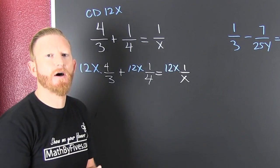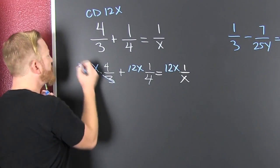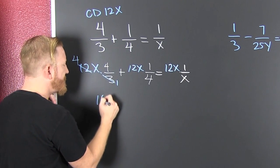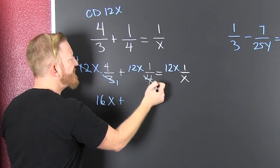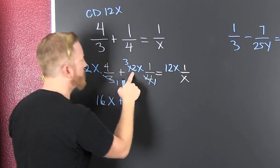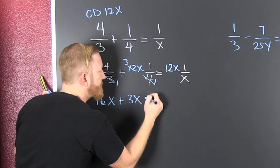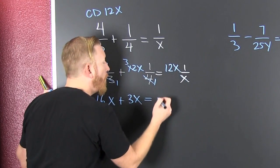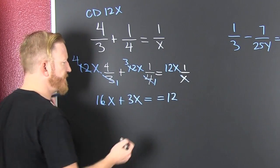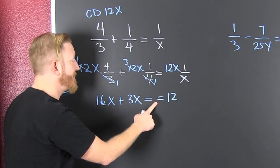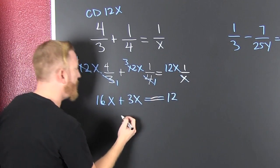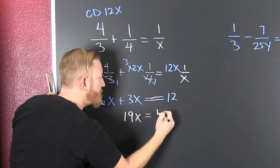Anybody see anything that can reduce? 4 times 4 is 16x, plus — that's a 3x. And that's really equal to 12. 16 and 3 is 19x, and that's equal to 12.